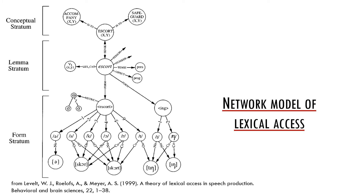On this slide we have a schema which represents our knowledge of the word 'to escort'. The conceptual stratum is similar to what the spreading activation theory would assume, so the concepts are connected to other concepts based on their semantic relations. For example, the concept 'escort' is connected to concepts such as 'accompany' and 'safeguard'. On the lemma stratum there are syntactic characteristics of the word, so we know it is a verb and it has certain grammatical features such as person, number, tense, or aspect. On the form stratum the phonological and morphological form of the word is represented, so we can see that the word consists of certain phonemes and morphemes.